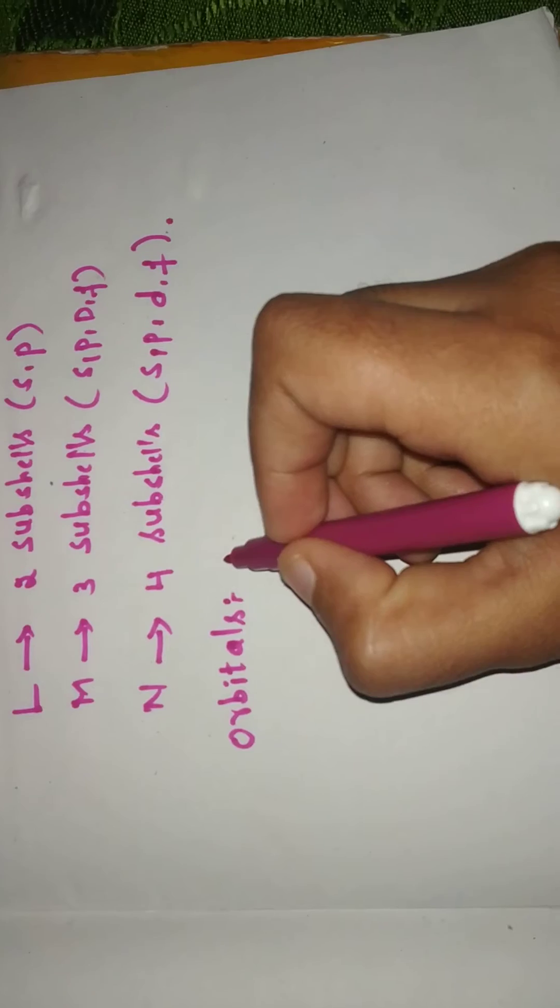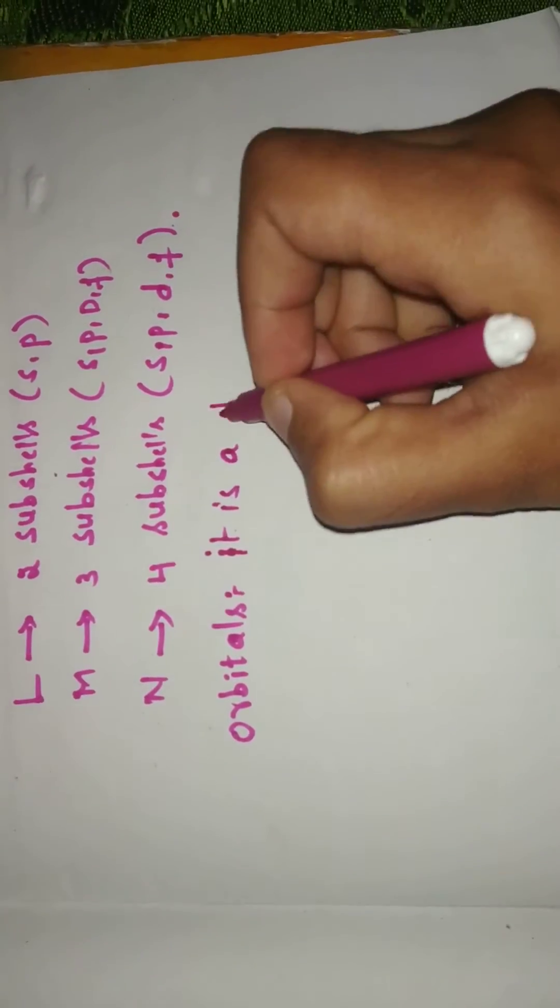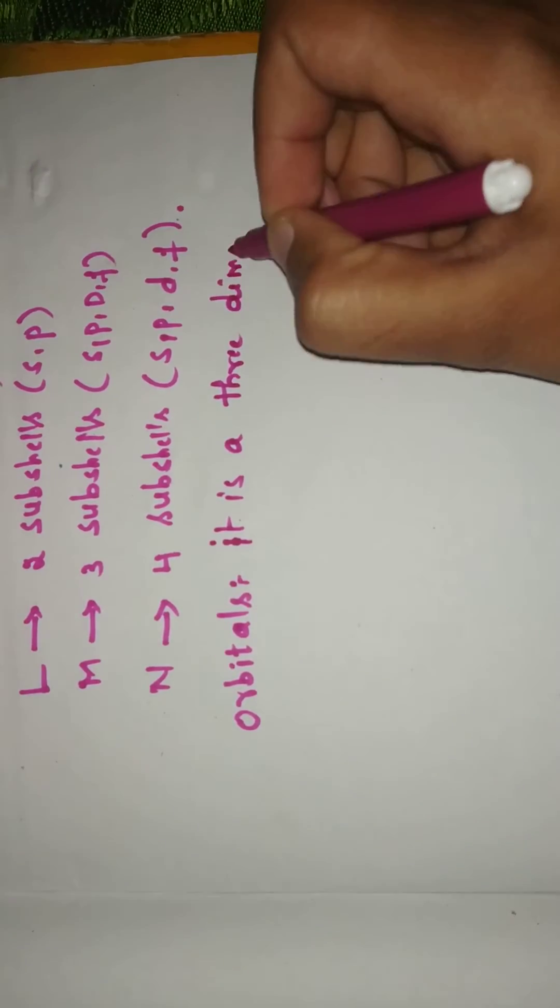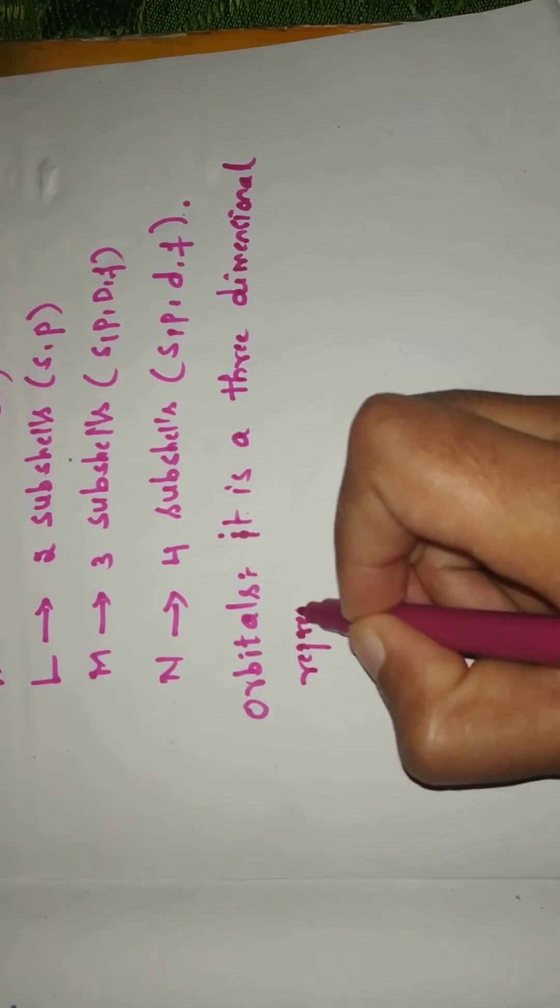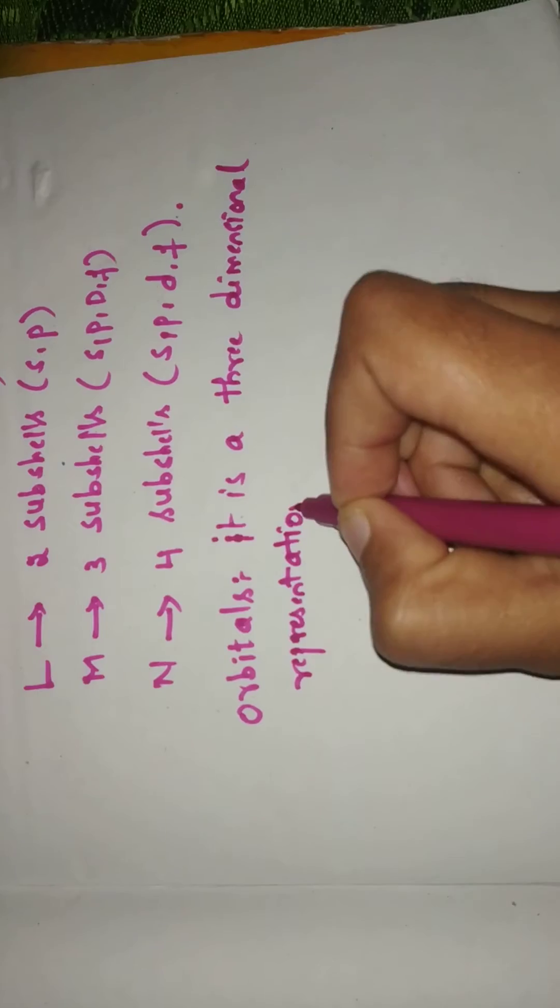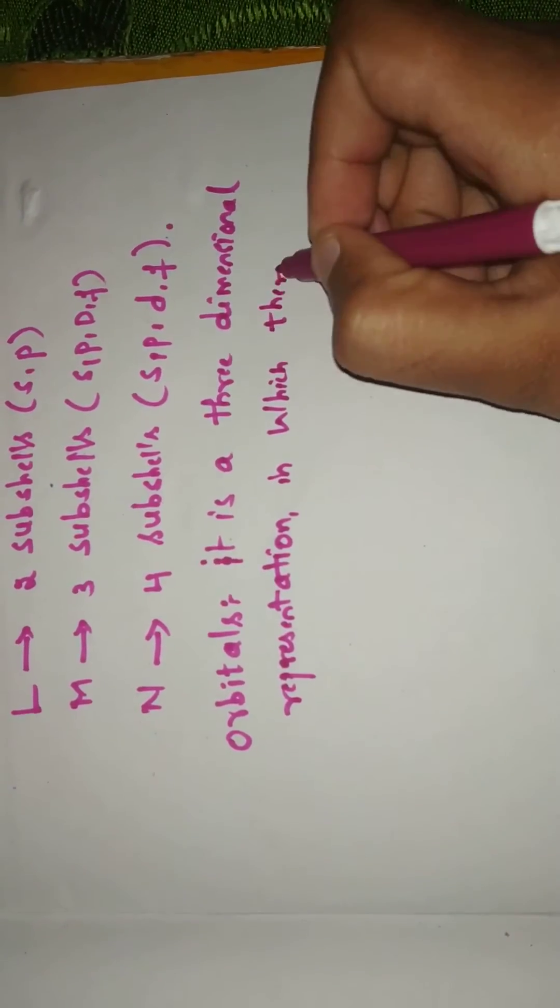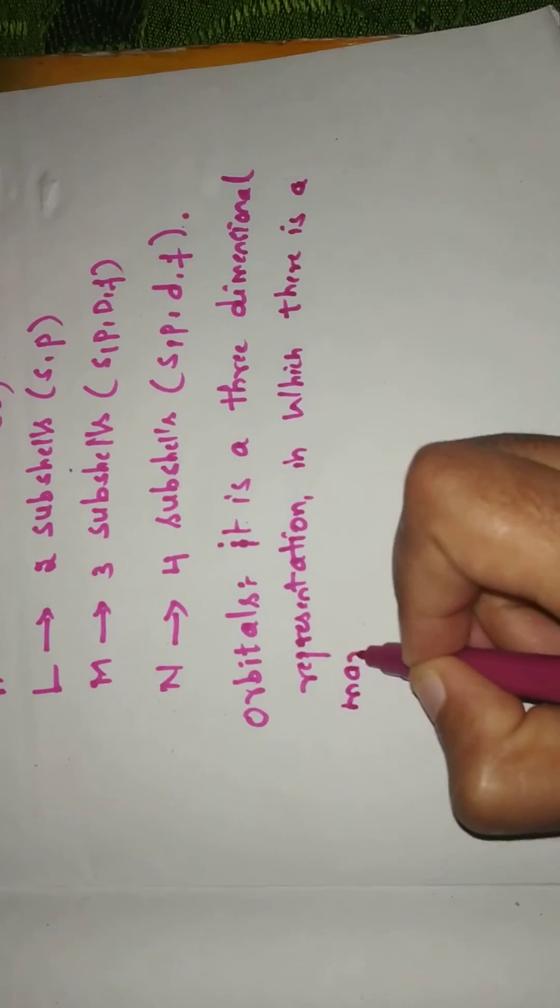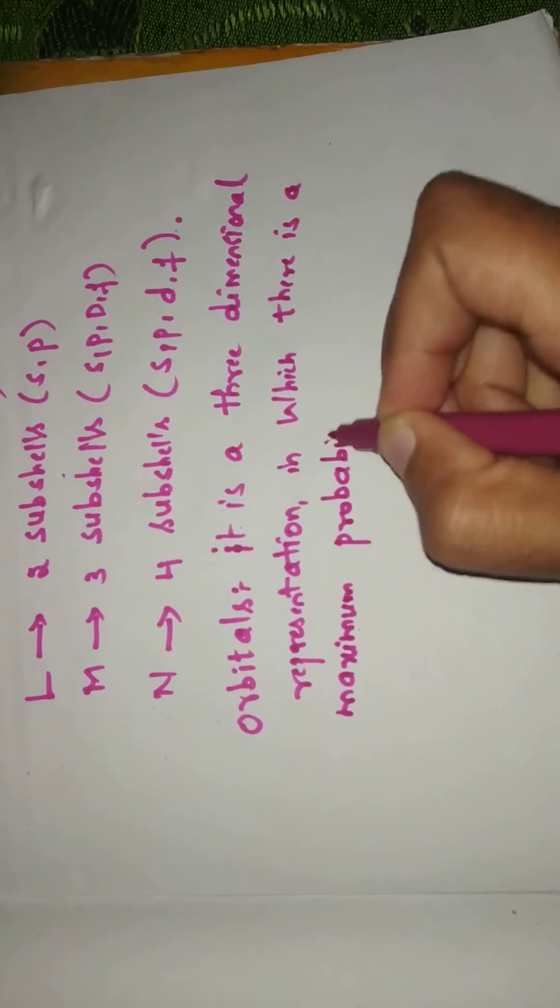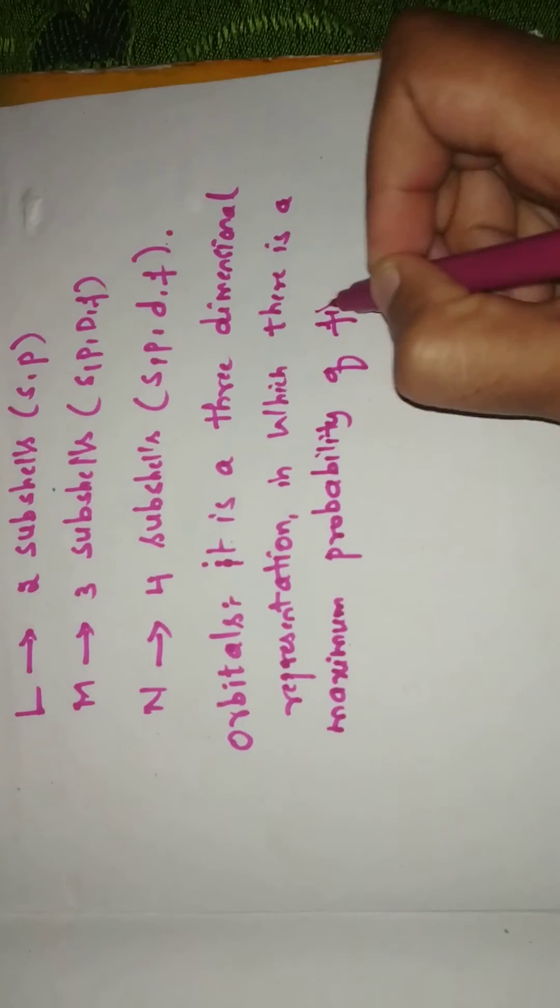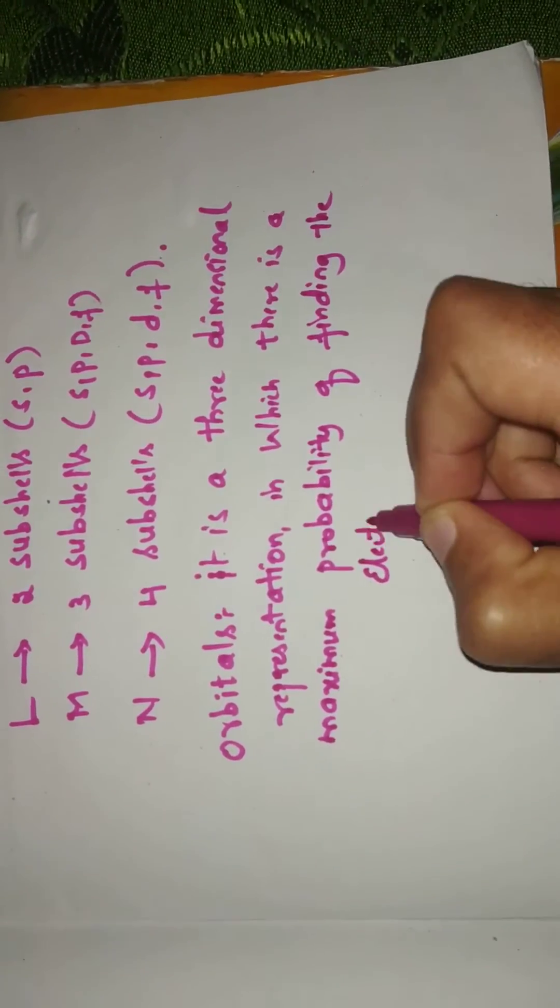An orbital is defined as a three-dimensional representation in which there is a maximum probability of finding the electron.